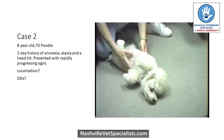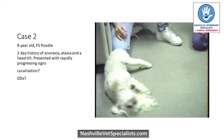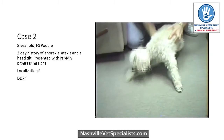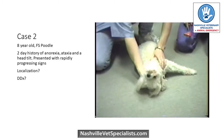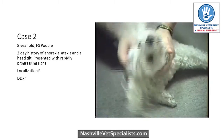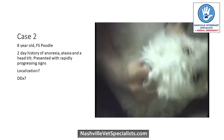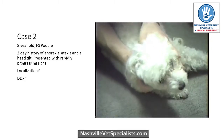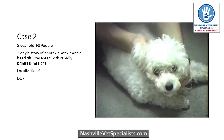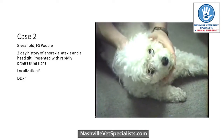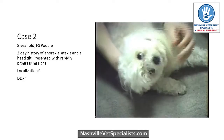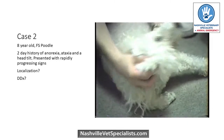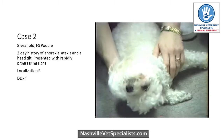This is an eight-year-old poodle with a two-day history of anorexia, ataxia, a head tilt, and signs that have been progressing rapidly. Just from watching this video, you may not be able to get the exact lesion localization, but you should have a pretty good idea. What sort of differentials would you have, just based on that history and the signalment?